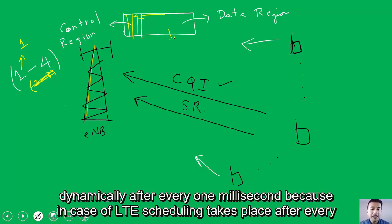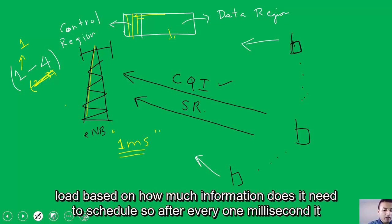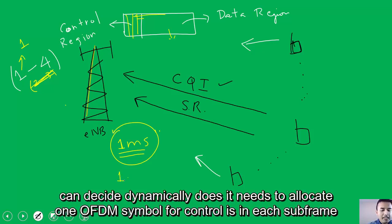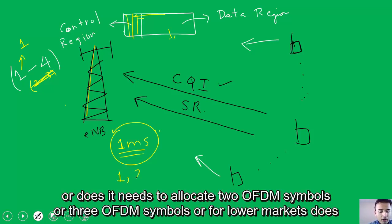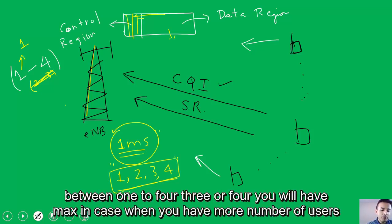This can be changed dynamically after every one millisecond, because in LTE scheduling takes place every one millisecond. After every one millisecond, the scheduler can decide — based on scheduling load and how much information needs to be scheduled — whether to allocate one, two, three, or for lower-band markets, four OFDM symbols for the control region. The standard specified in 3GPP allows anywhere between one to four.